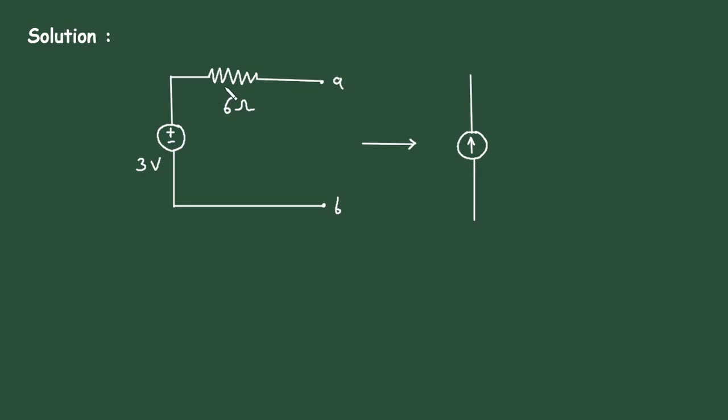Now, the 6 Ohm resistor is connected in series with this voltage source. But for this, it will be in parallel. So here it will be in parallel with this current source.